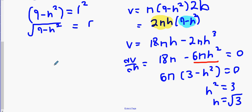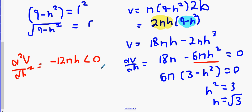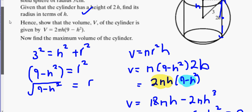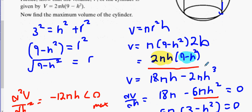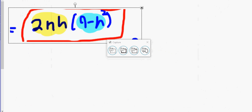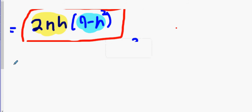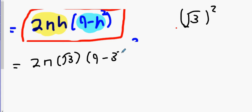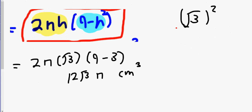The second derivative comes out to minus 12 pi h, which is always negative, confirming a maximum. Now get your original equation and replace h with root 3: 2 pi root 3 times (9 minus 3) equals 2 pi root 3 times 6, which gives 12 root 3 pi. That's question 13 done. Now on to 15.